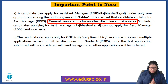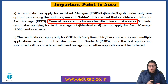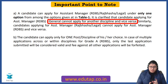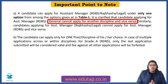An important rule: if you are applying for the generalist post, you cannot also apply for a specialist discipline, and vice versa. You can only apply for one post. Similarly, if applying under RDBS, you cannot also apply for Rajbhasha or Legal. If you fill more than one form, only the latest will be considered. For specialist posts, you can apply for only one discipline. Do not risk disqualification by submitting multiple forms.